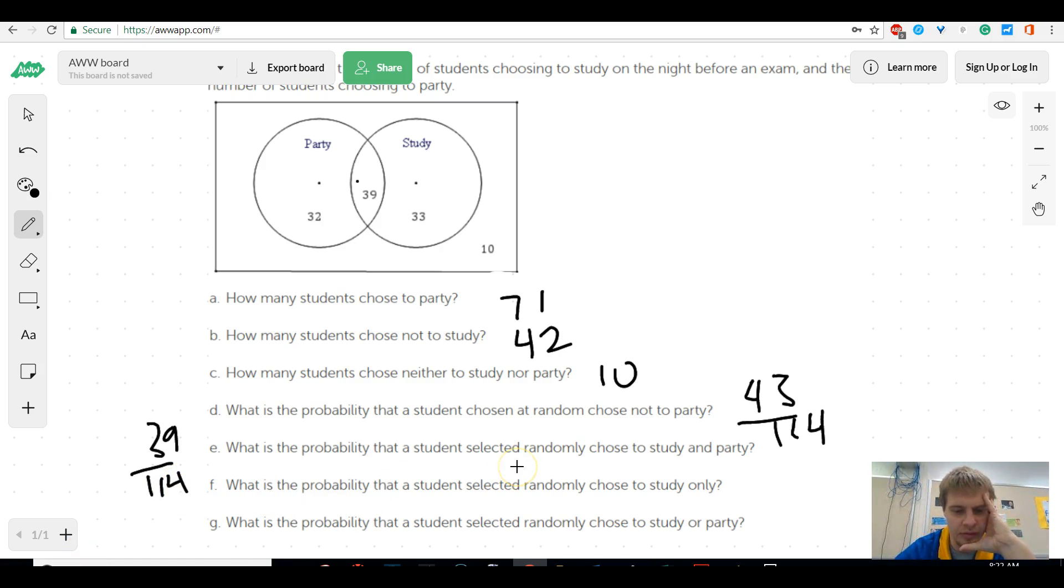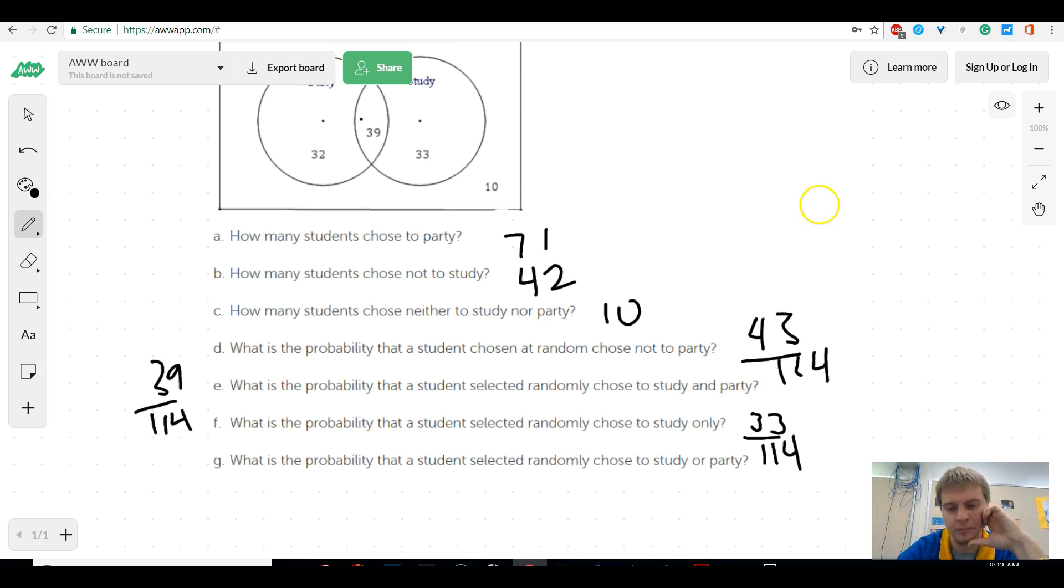What is the probability that a student selected at random chose to only study? Well, only study would be these 33, because the other people in there chose to party. And then, what's the probability that they chose to study or party? Well, that would be this group right here, which is 104 over 114, which makes sense, because it should be everyone but this 10 people.